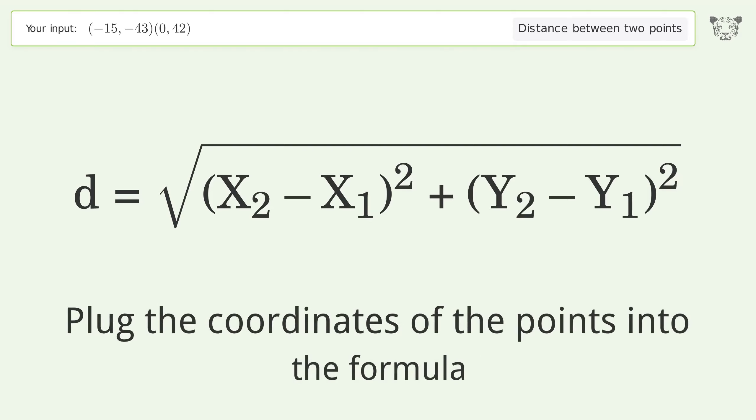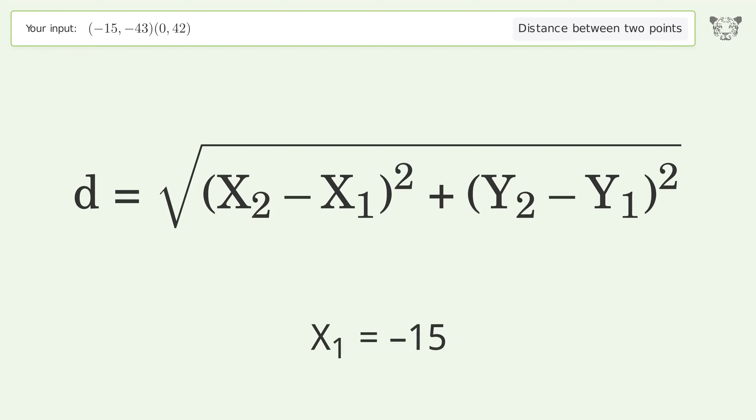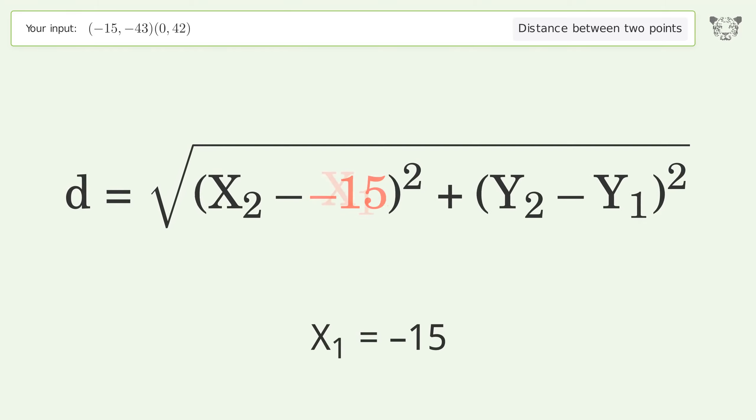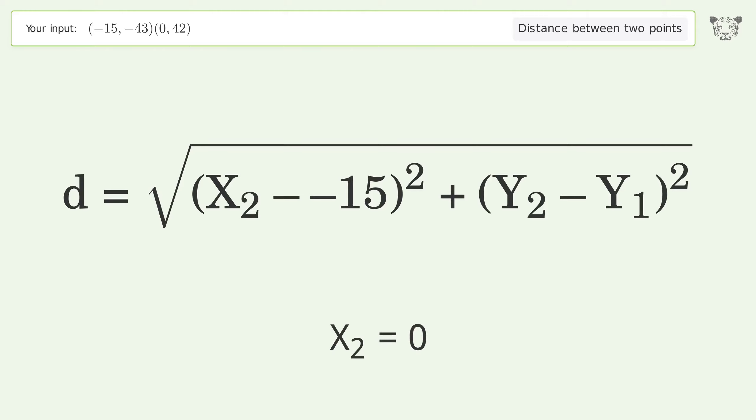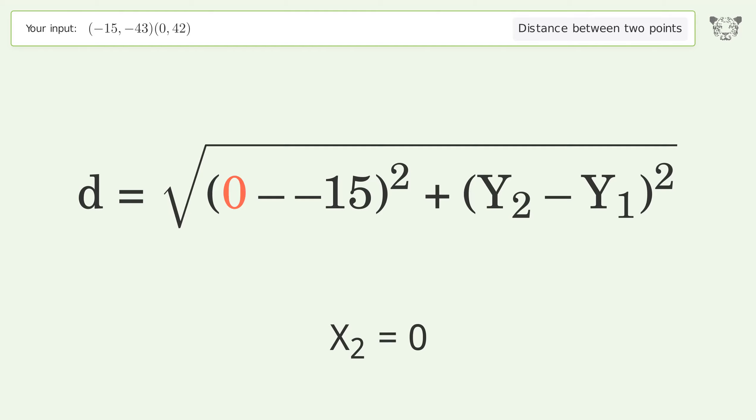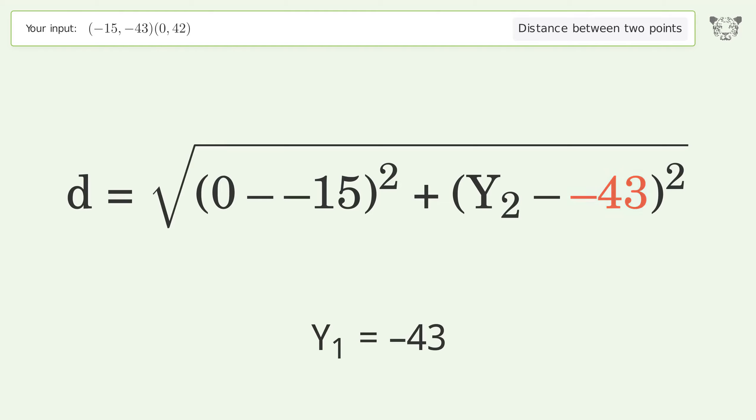Plug the coordinates of the points into the formula. x1 equals negative 15, x2 equals 0, y1 equals negative 43, y2 equals 42.